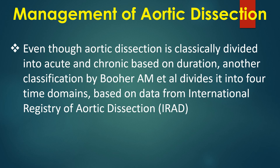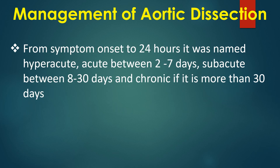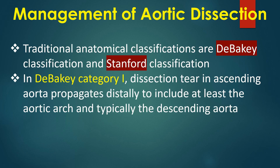Though aortic dissection is classically divided into acute and chronic based on duration, a classification by Booher and associates divides it into four time domains based on data from the International Registry of Aortic Dissection: hyperacute (symptom onset to 24 hours), acute (2–7 days), subacute (8–30 days), and chronic (more than 30 days). Traditional anatomical classifications are DeBakey and Stanford.